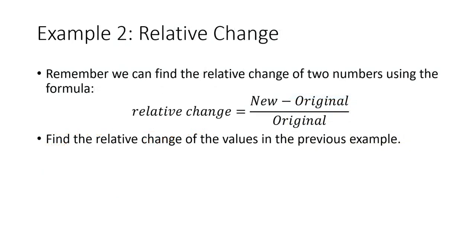Remember, we can determine the relative change of two numbers just using the formula that's provided here. So let's look at the previous examples and find the relative change of those variables. So the first two was $10,700 minus $10,000, and then we're going to divide by the original value, which was $10,000. And that'll give us $700 divided by $10,000.